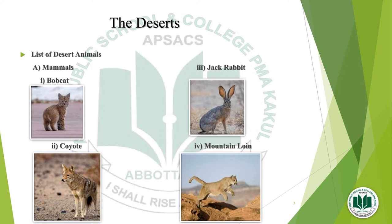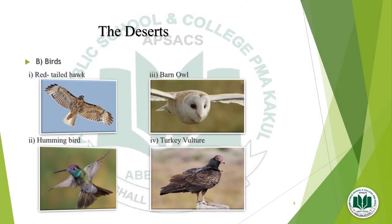Here you can see pictures of different animals — these are the desert animals. First we will discuss mammals: bobcat, coyote, jack rabbit, and mountain lion. Next are the birds that live in the desert: red-tailed hawk, hummingbird, barn owl, and turkey vulture. All these are the desert birds.